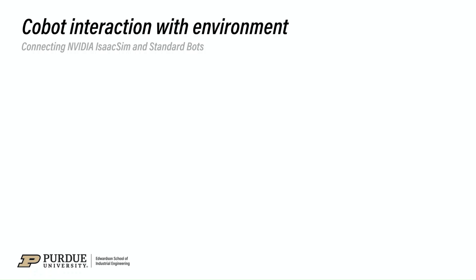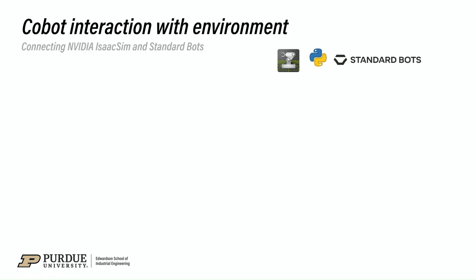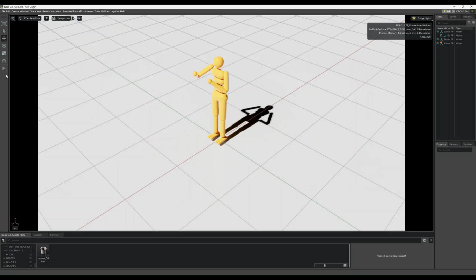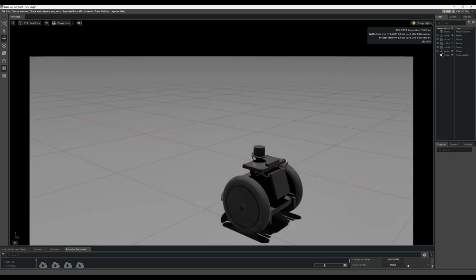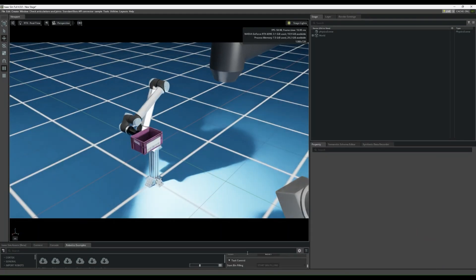To tackle the object interaction problem, we took a unique approach. We need a simulator that can represent the Cobot mechanism as well as interact with the surroundings. What if we could integrate StandardBots and ISAX SIM? We can create a custom extension using Python in ISAX SIM. It is a 3D simulation software that is backed by real physics and is highly customizable.